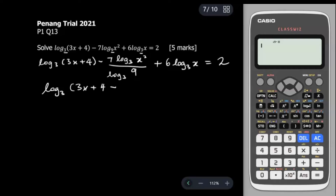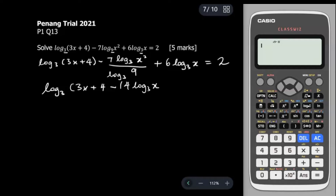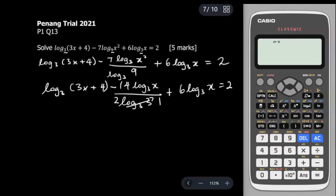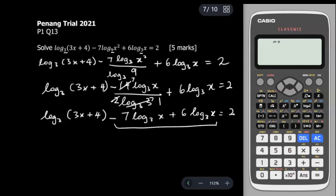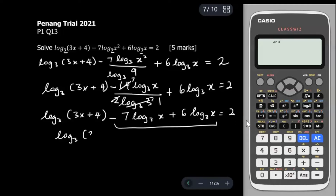After converting, we have log base 3 of (3x + 4), minus a fraction with log₃(x²) on top and log₃9 at the bottom, plus 6 log base 3 of x, equals 2. Since 9 = 3², log₃9 = 2, and the 4 from the numerator brings down with the 7 to give 14 over 2 — simplifying the coefficient to 7. This gives log₃(3x + 4) minus 7 log₃x plus 6 log₃x equals 2.